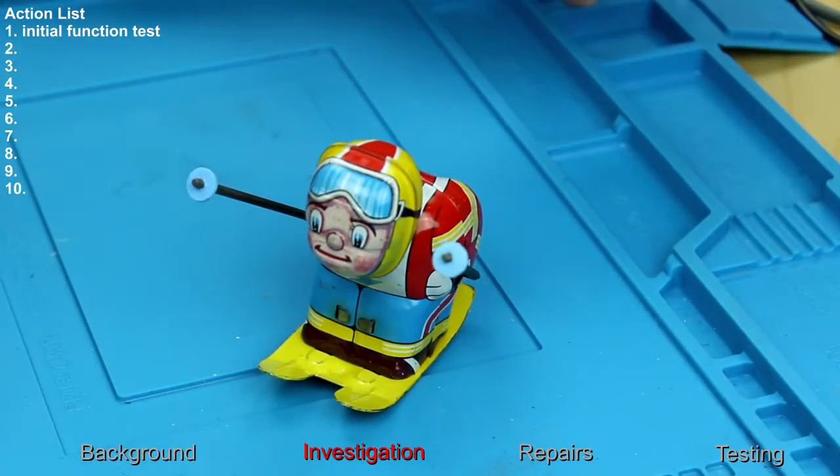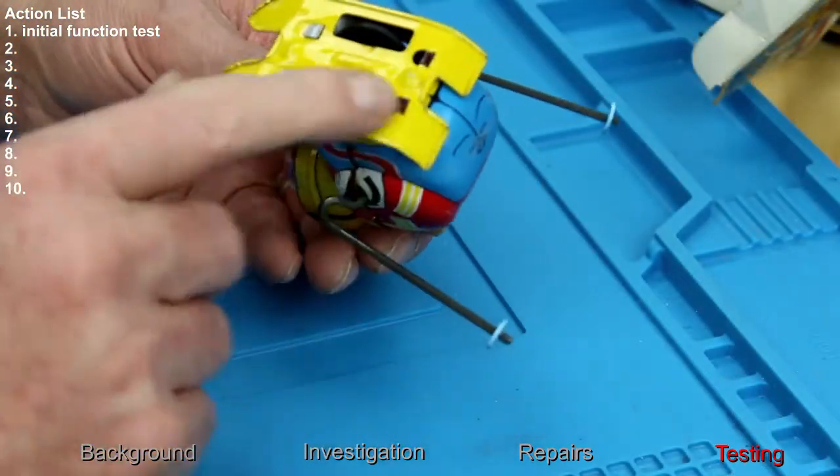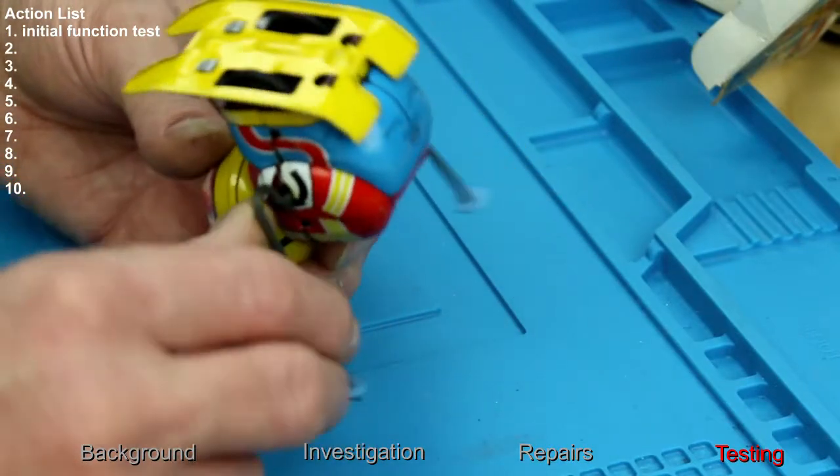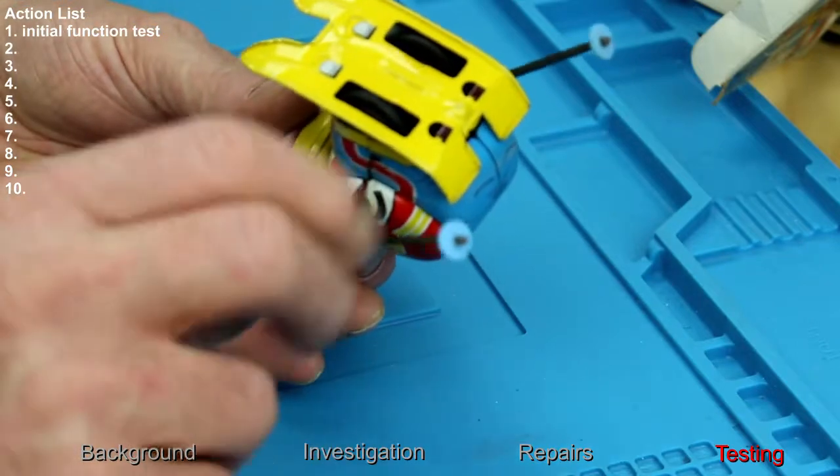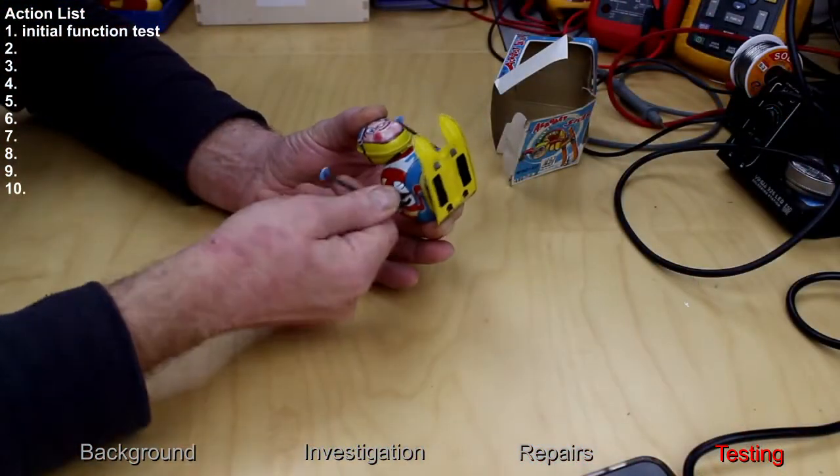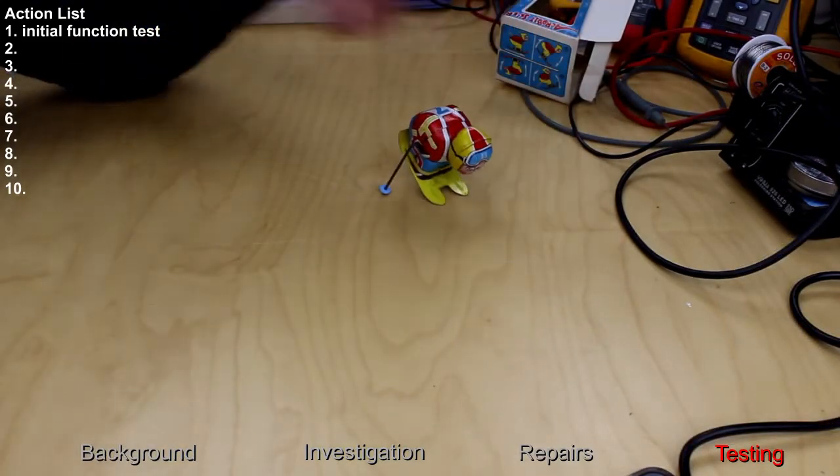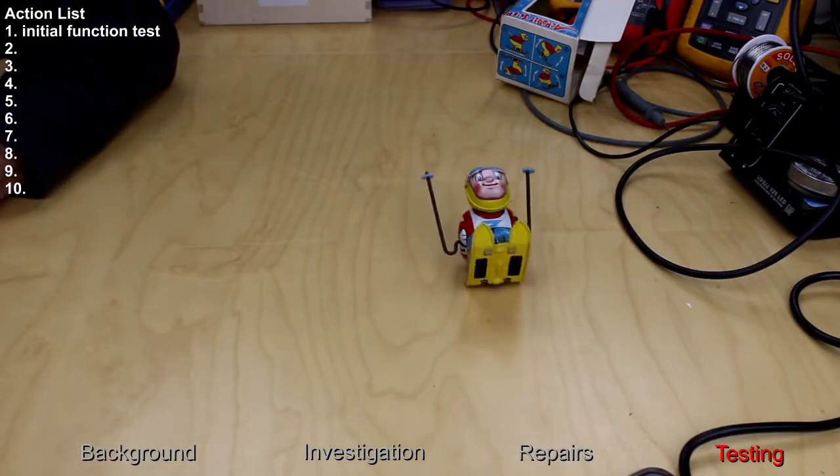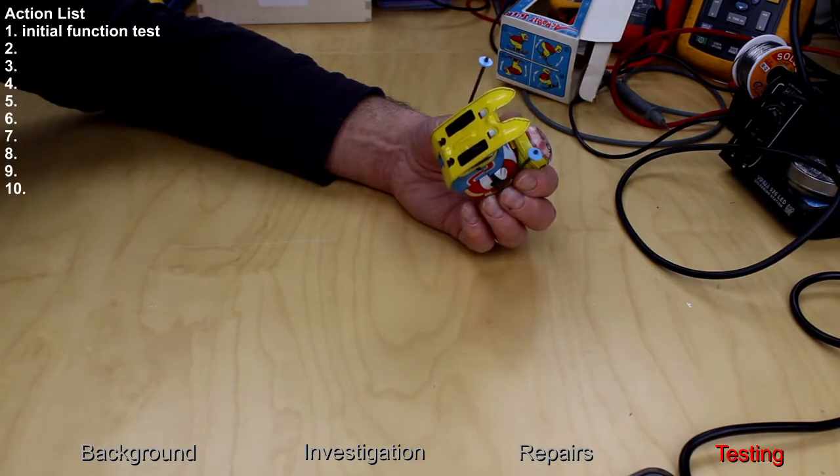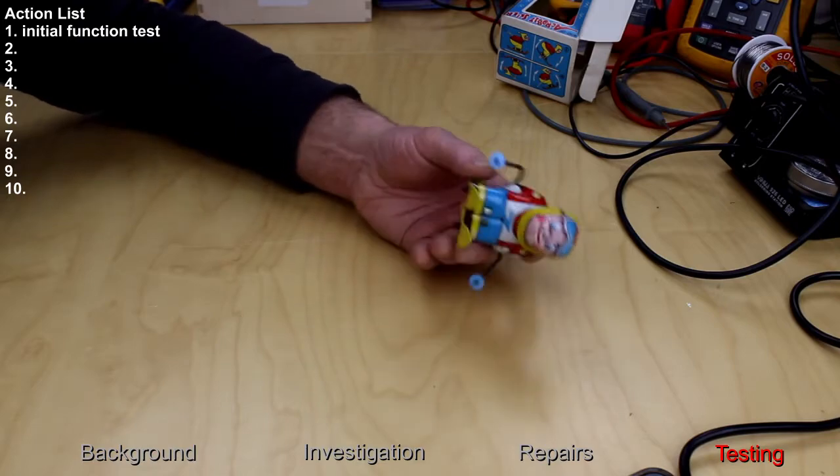So how do you wind it up? Just wind up on the skis. I'm just mechanically moving this around and it's now become free. Just wind it up. Okay, so I managed to free the mechanism up without taking it apart.